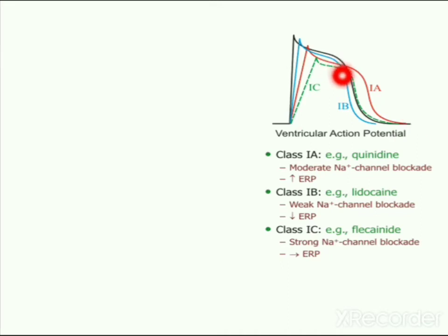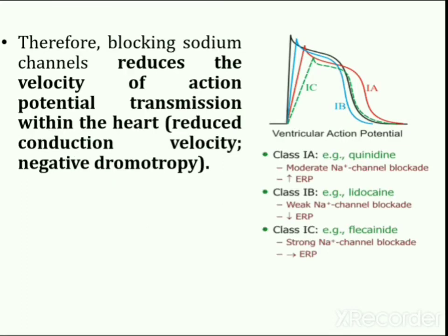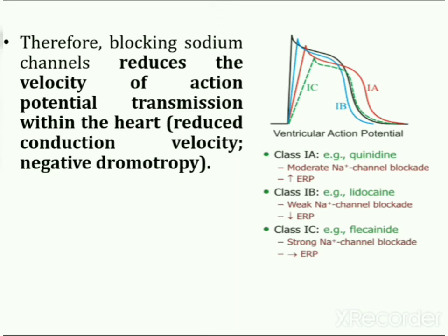Here you can see the decrease of slope by different sodium channel blockers. The principal effect of reducing the rate and magnitude of depolarization by blocking sodium channels is a decrease in conduction velocity in non-nodal tissue. The faster a cell depolarizes, the more rapidly adjacent cells will become depolarized, leading to more rapid regeneration and transmission of action potentials between cells. Therefore, blocking sodium channels reduces the velocity of action potential transmission within the heart. This can serve as an important mechanism for suppressing tachycardias caused by abnormal conduction.